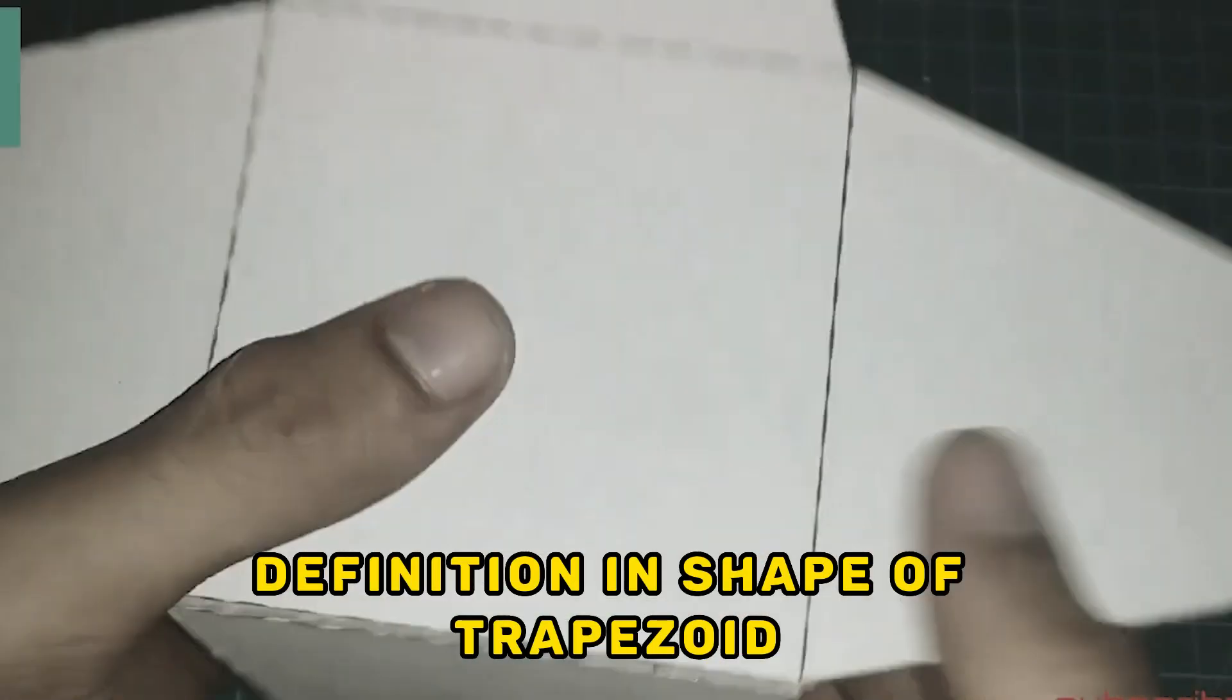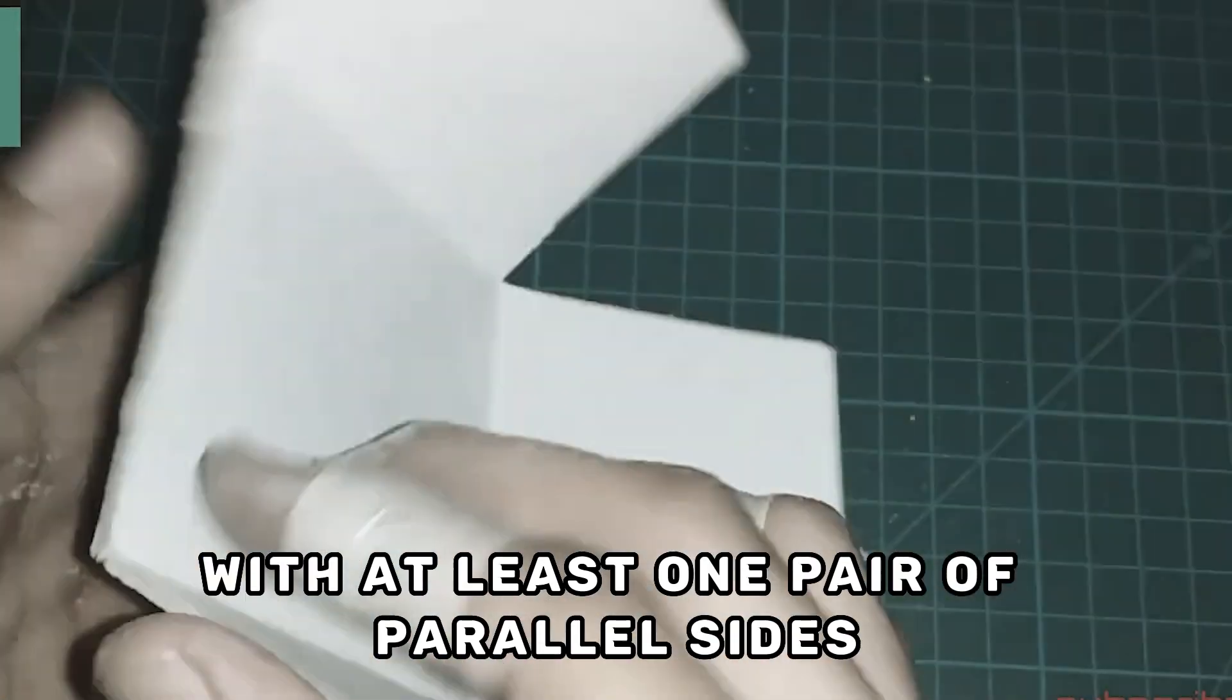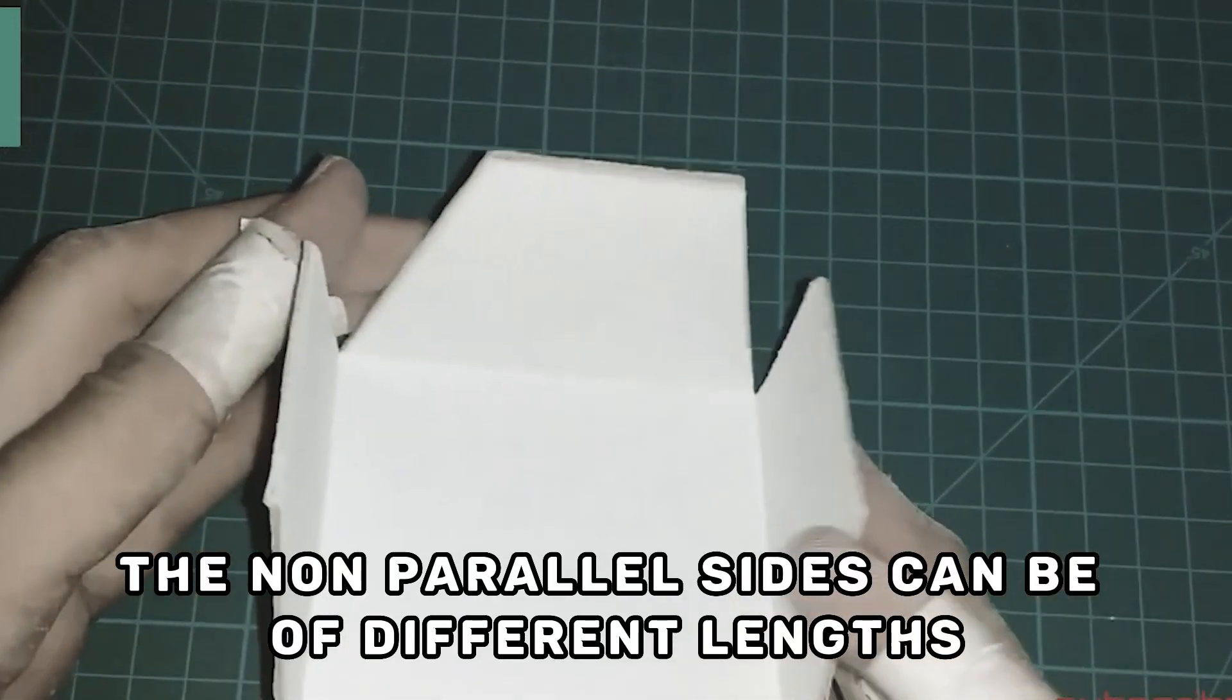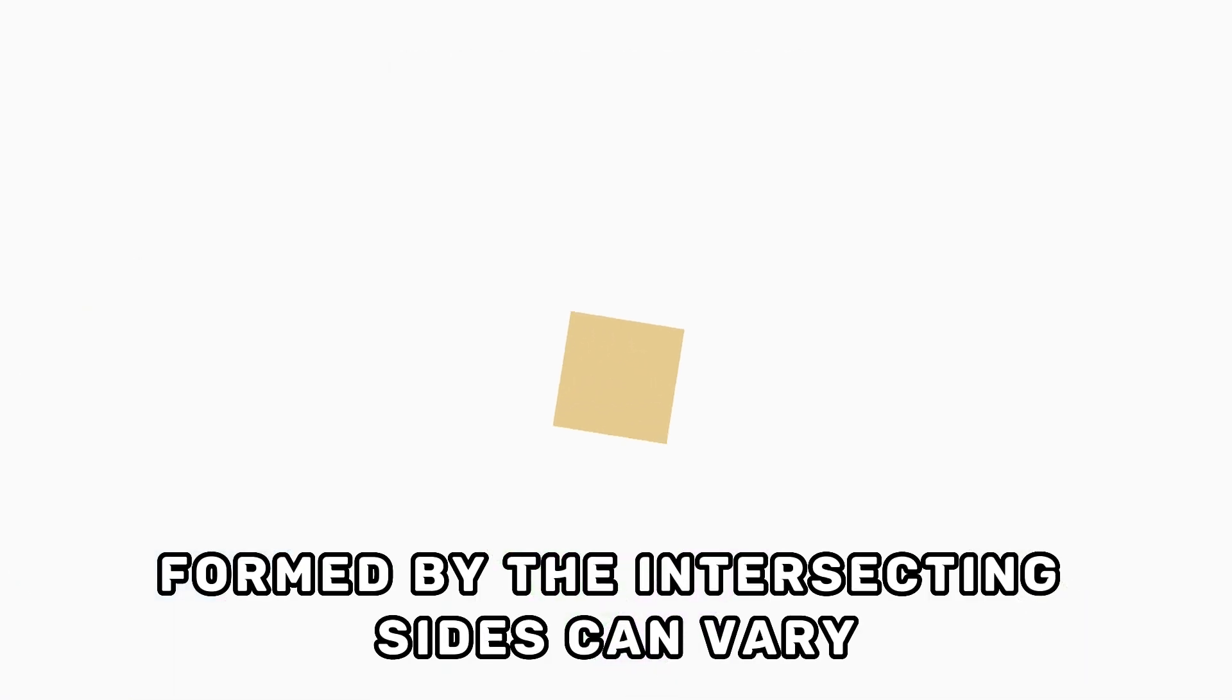Definition and shape of trapezoid: A trapezoid is a quadrilateral with at least one pair of parallel sides. The non-parallel sides can be of different lengths, and the angles formed by the intersecting sides can vary.